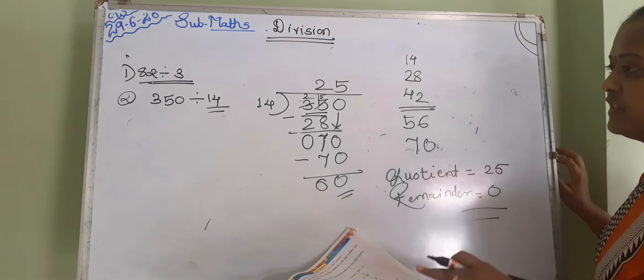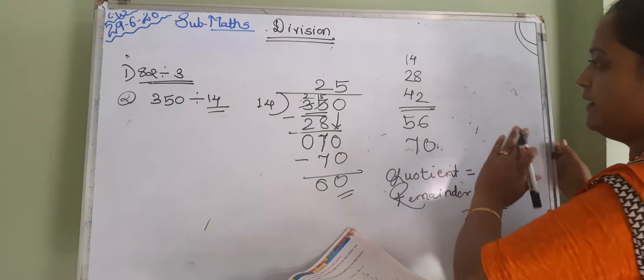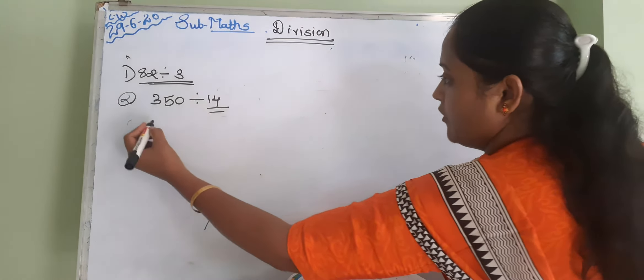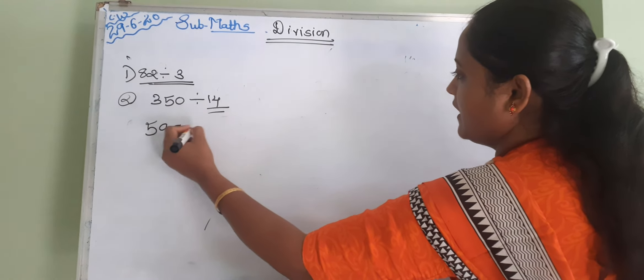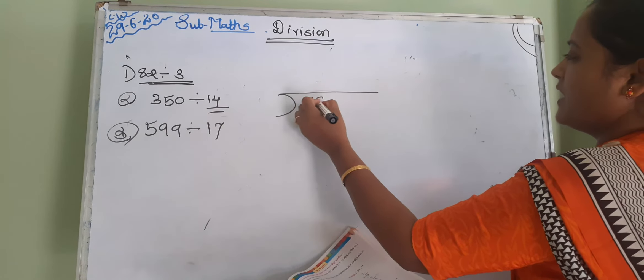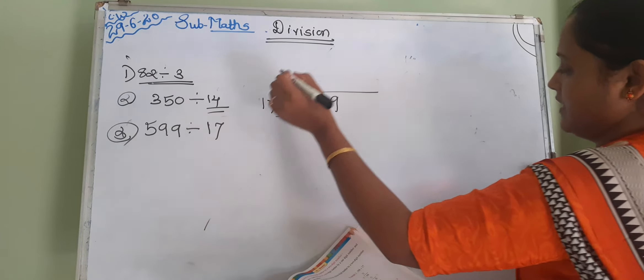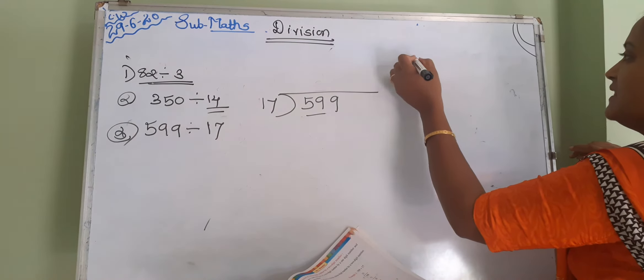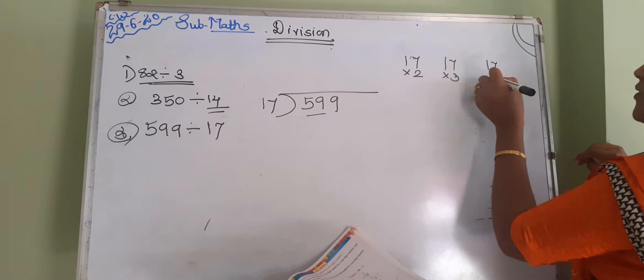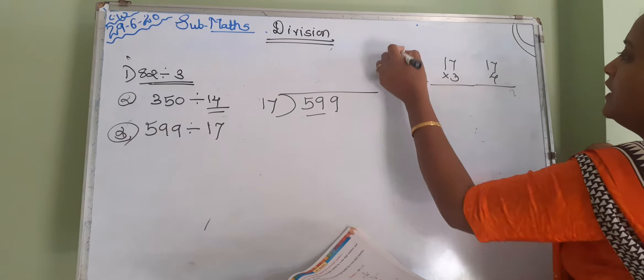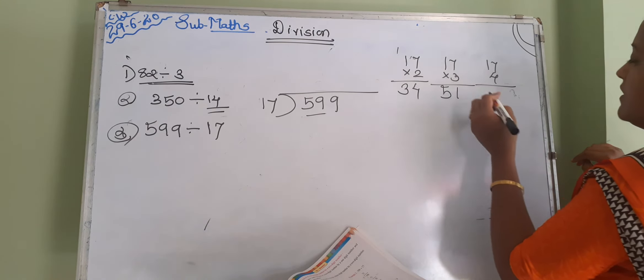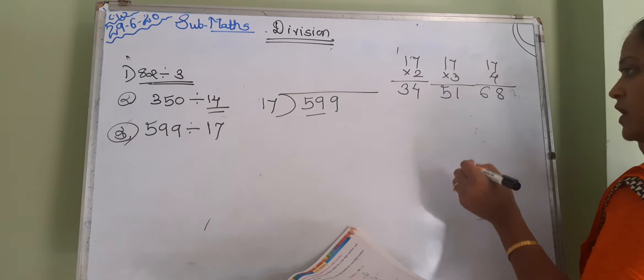Like that you have to solve that 2 digits dividing. Another sum I am taking, it's 599 divided by 17. अगर आपको 17 का table नहीं आता है, you just multiply by that.